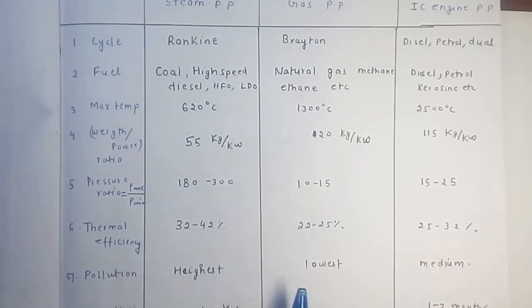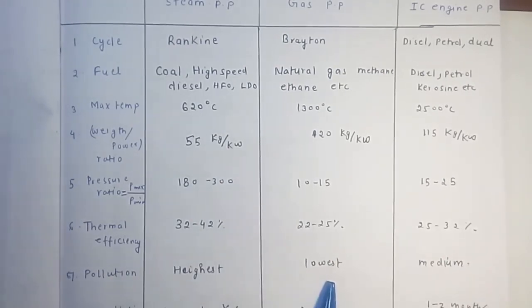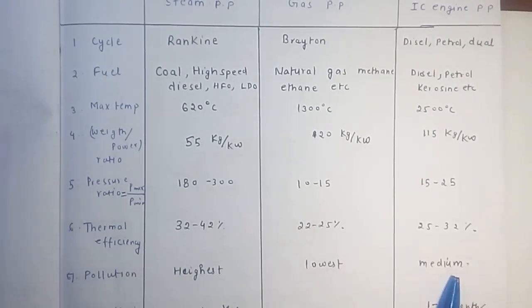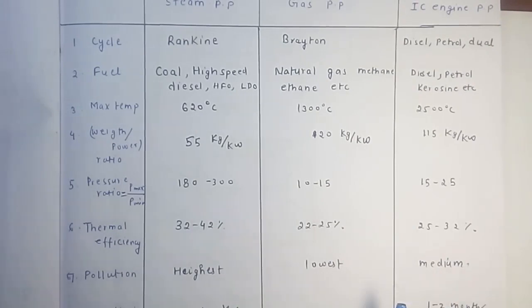The steam power plant produces the highest pollution, the gas turbine power plant produces the lowest pollution, and the IC engine power plant falls in the medium range.